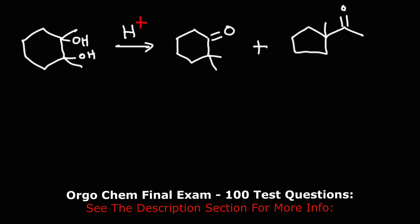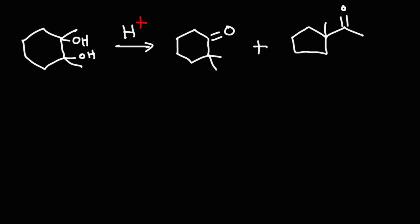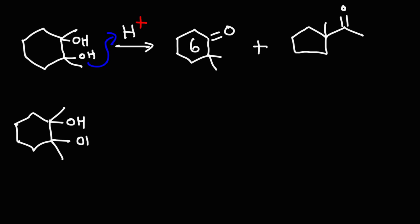Feel free to pause the video if you want to try this problem. Let's begin by getting the six-carbon ring mechanism. Due to symmetry, we can protonate any one of the two hydroxyl groups, so it really doesn't matter which one we start with initially. Like before, the first step is going to be protonation — we're going to convert the hydroxyl group from a poor leaving group to a better leaving group. After protonation, this is going to behave like an SN1 reaction and the leaving group is going to leave.